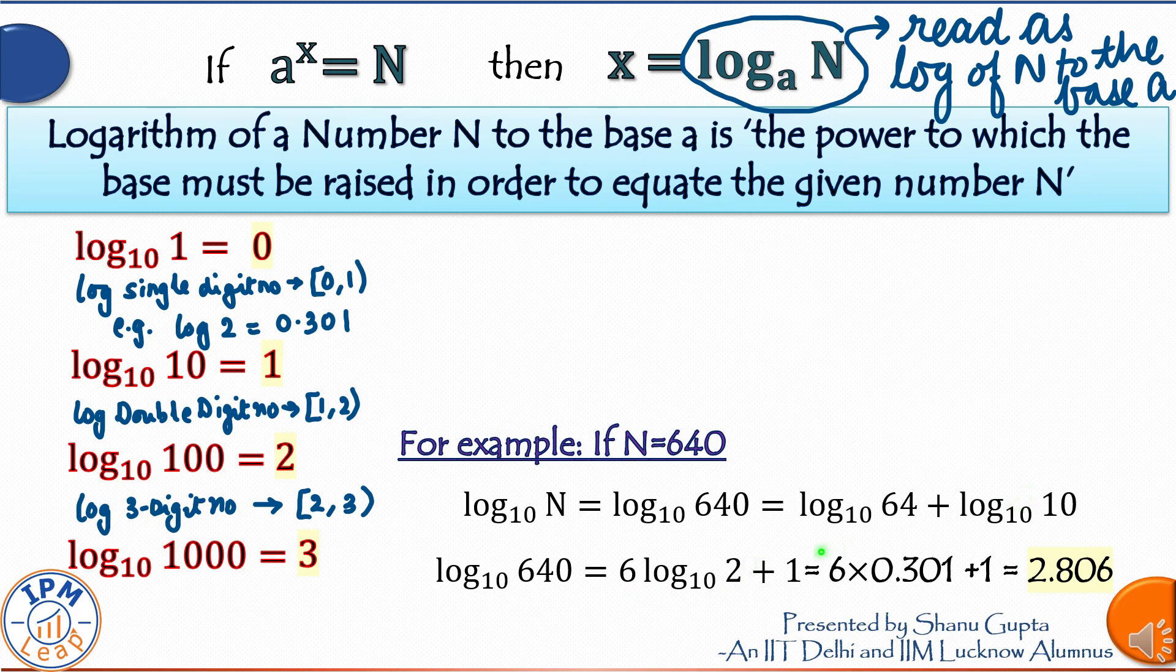Let us substitute the given value of log 2. Log of 640 evaluates to 2.806. As I told you earlier, for any 3 digit number, its log will be a value between 2 and 3. And this confirms that.